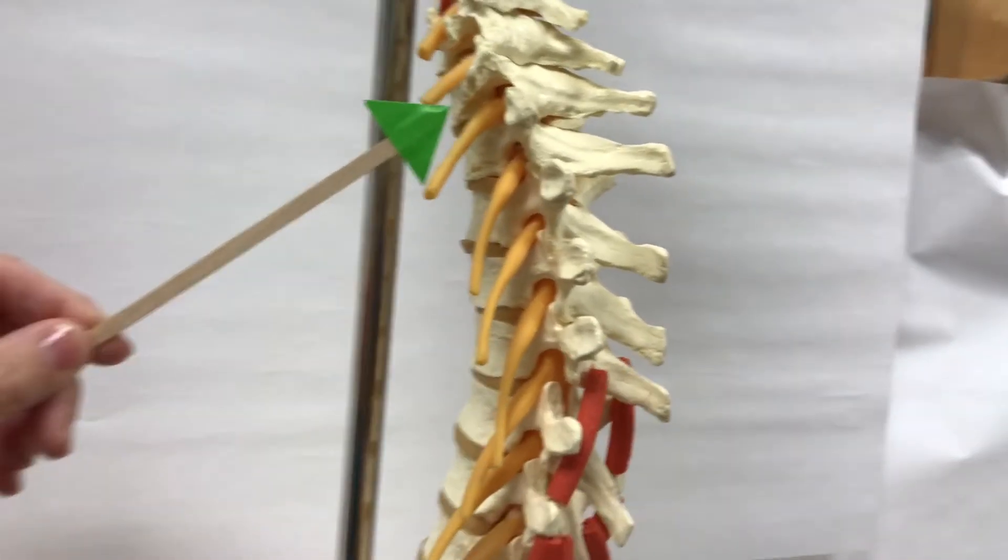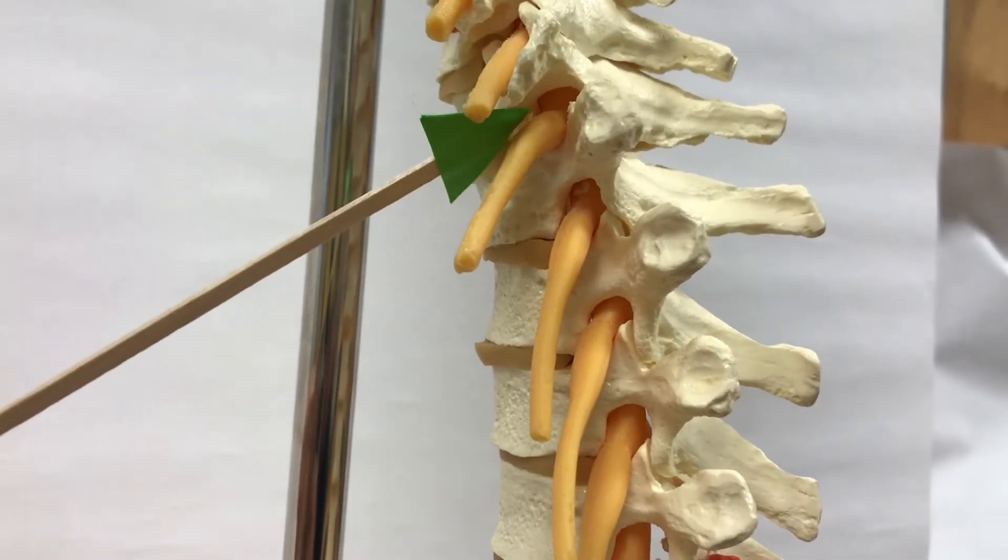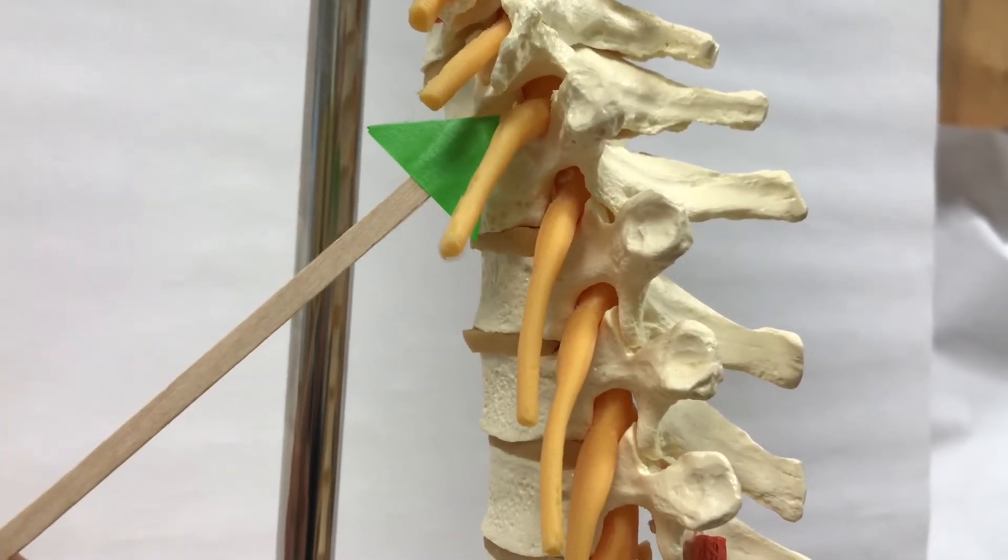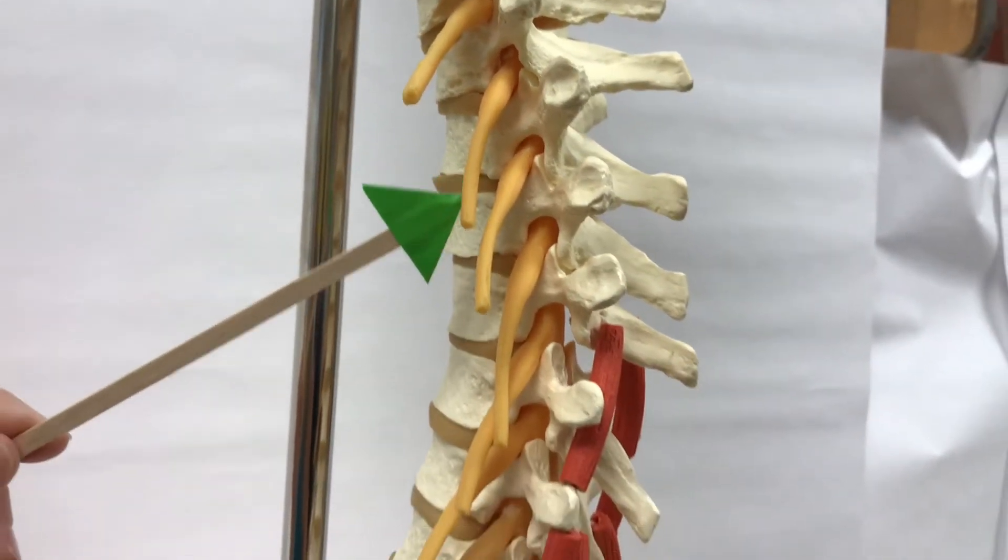When these vertebrae are stacked on top of each other, you can see there's a hole right here. This hole is called the intervertebral foramen, and the spinal nerves leave through these holes.